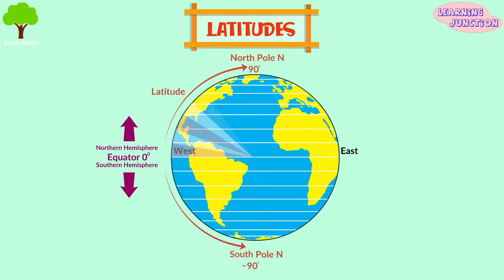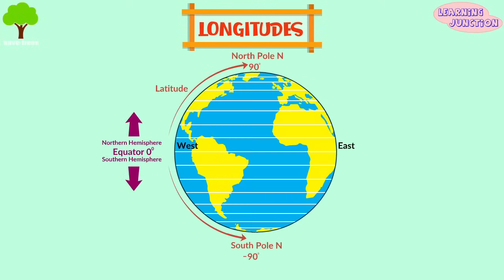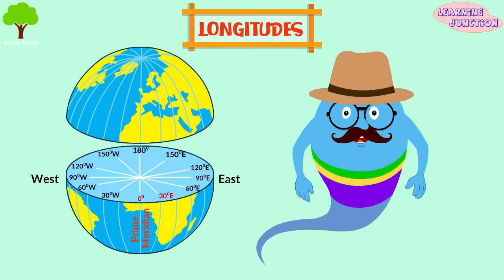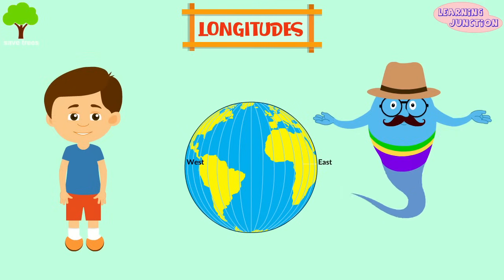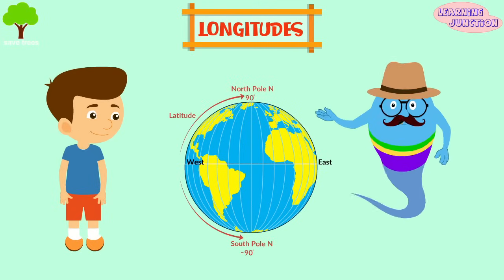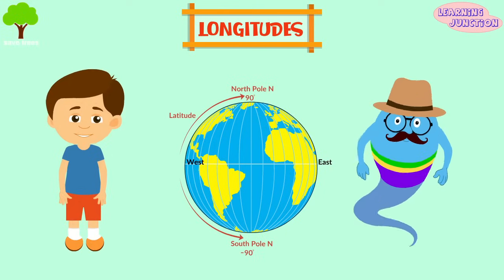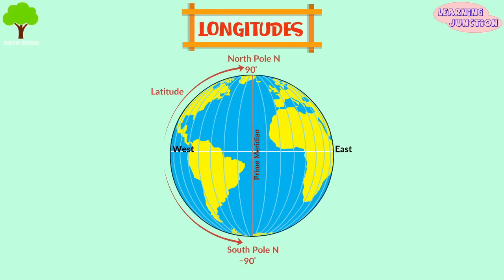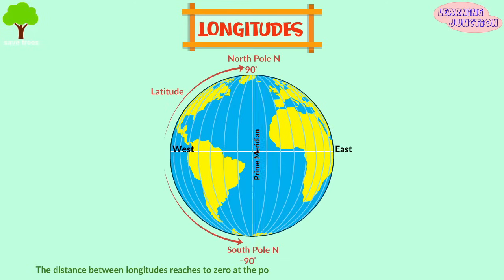The distance between each degree of latitude is approximately 69 miles. And now the longitudes. Longitudinal lines run from the north pole to the south pole. It measures how far east or west a point lies from the prime meridian. These are also known as meridians. Longitudes can range from zero degrees to 180 degrees east. The distance between longitudes at the equator is the same as latitude, roughly 69 miles. At 45 degrees south or north, the distance between is about 49 miles. The distance between longitudes reaches zero at the poles as the lines of meridian converge at that point.